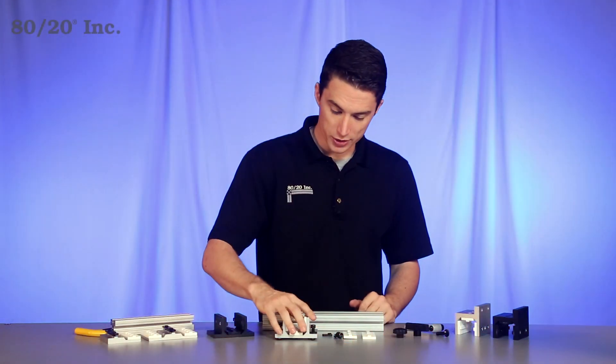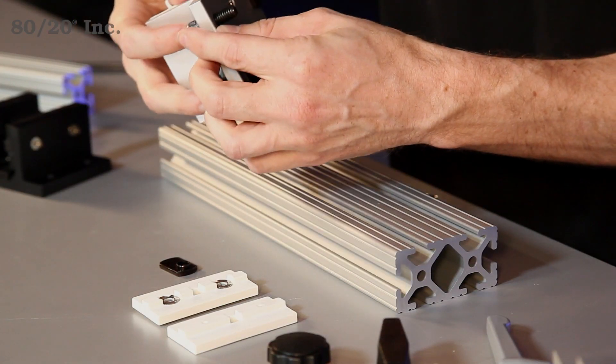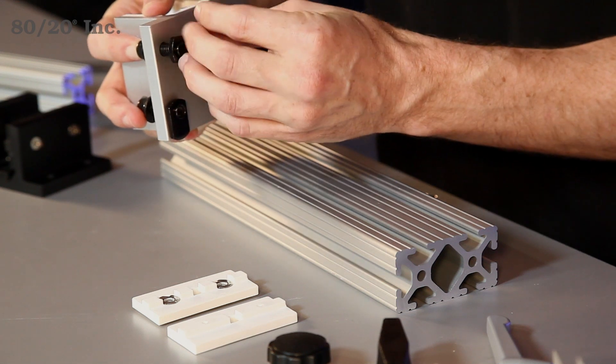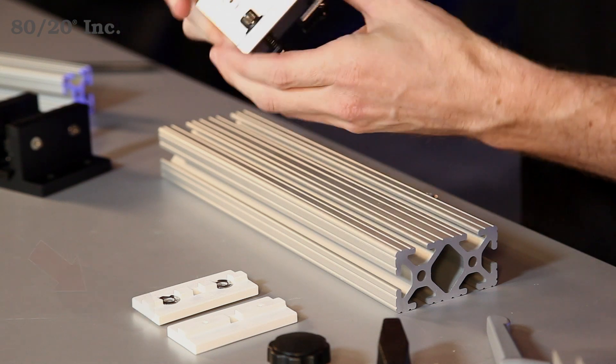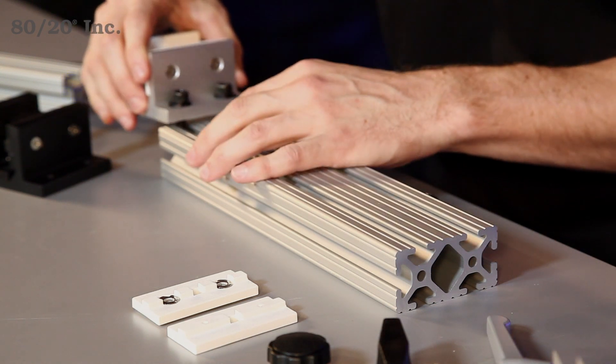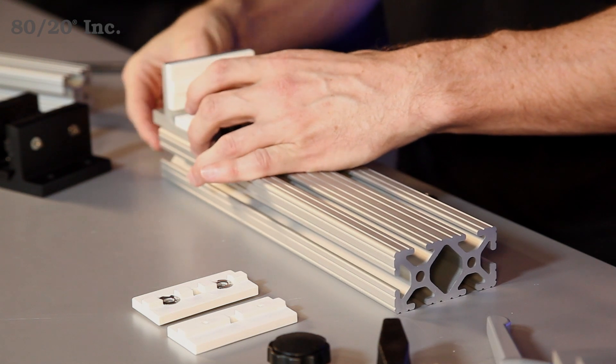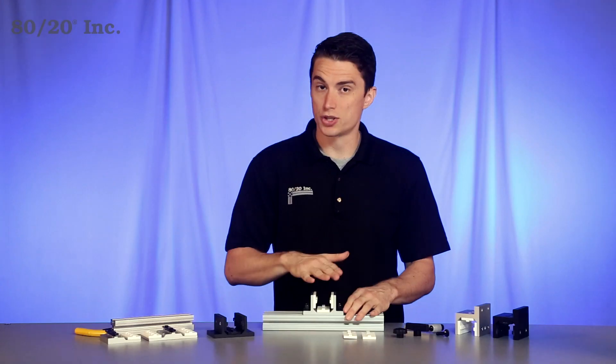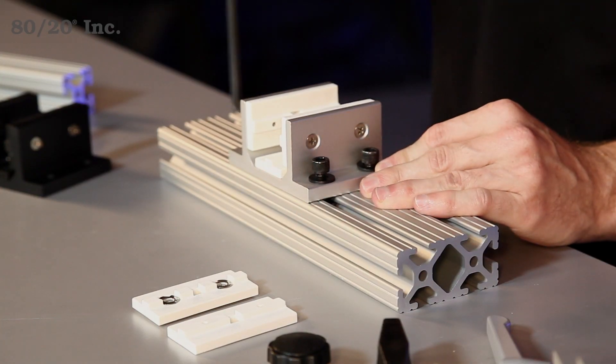Now to install this, we're going to take our linear bearing, put one last bolt and washer in it. Take our T-nut and pre-load it on there. You want to make sure that your pilot projection is facing downwards or away from the bearing. From there, just line it up with the open T-slot and slide it on. You'll find the position that you want, take your wrench, and you'll tighten down the bolts.